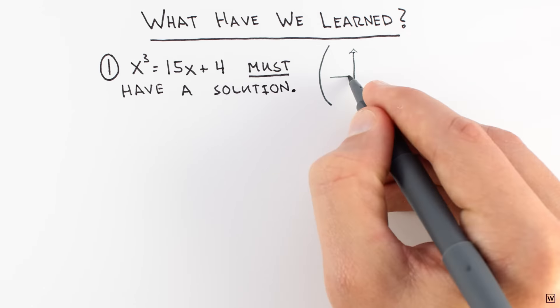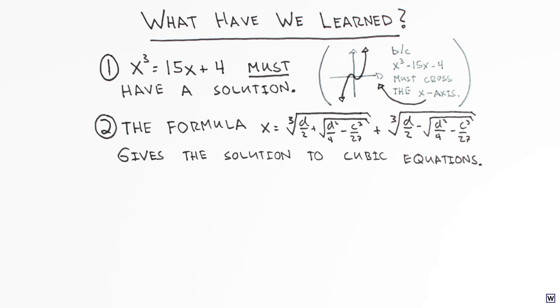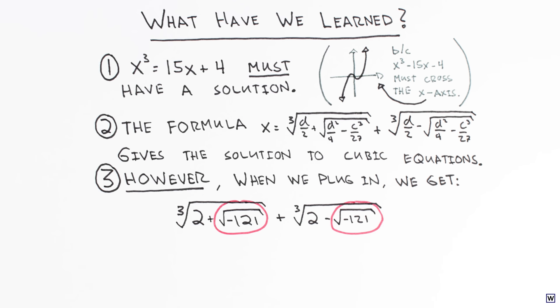So what we have here is a problem that must have an answer and a formula that has been proven to work. But when we put these together and try to solve the problem with our formula, we quickly arrive at what appears to be the impossible, the square roots of negative numbers.